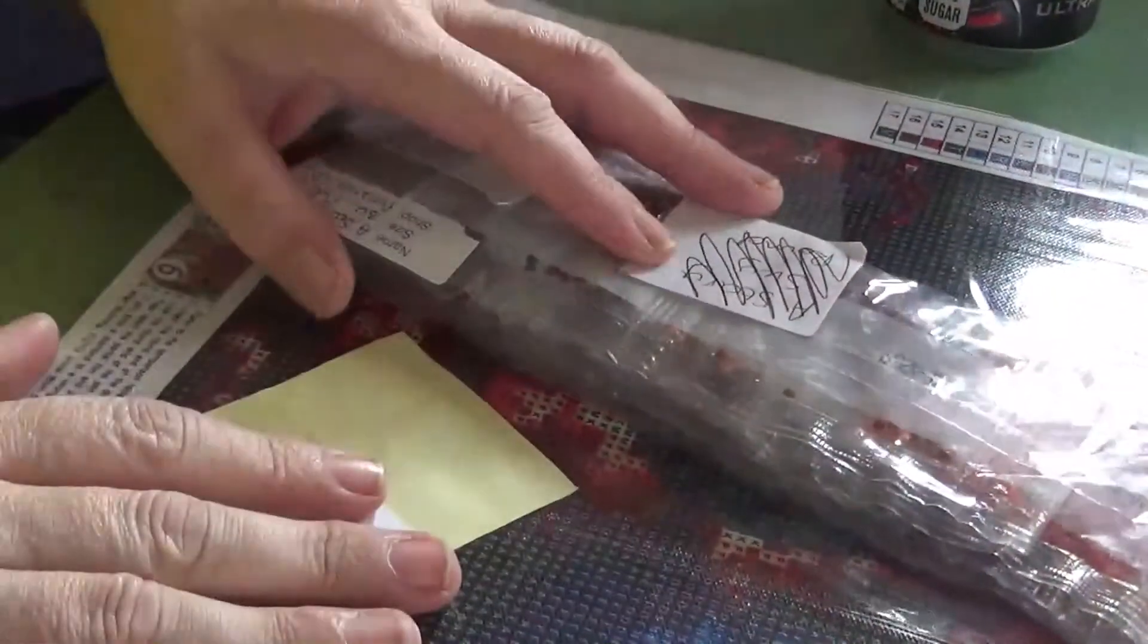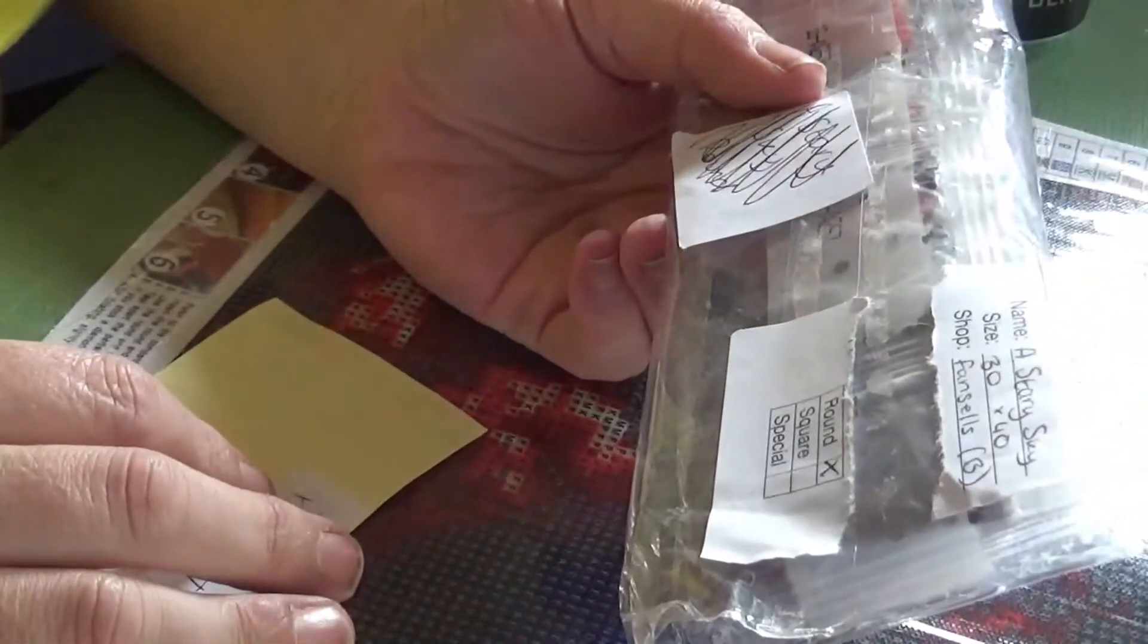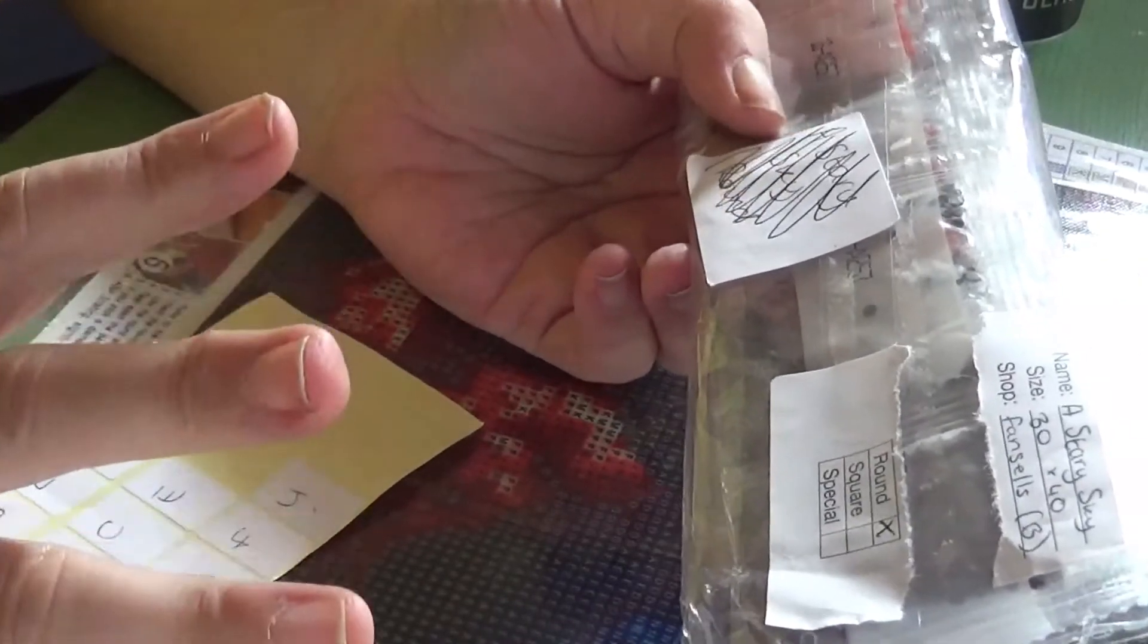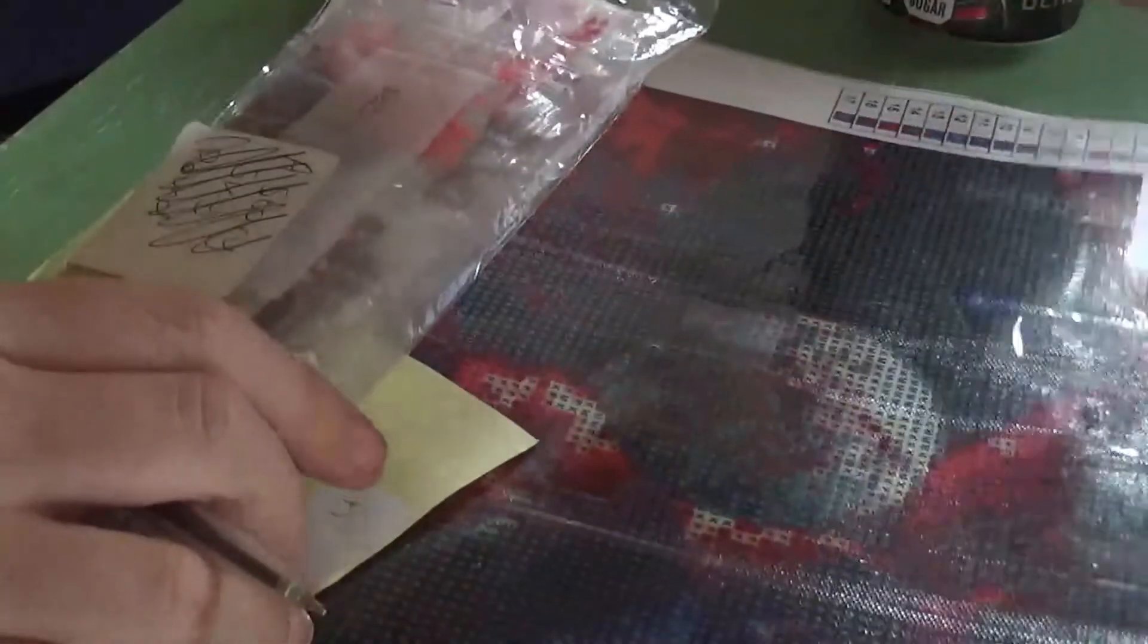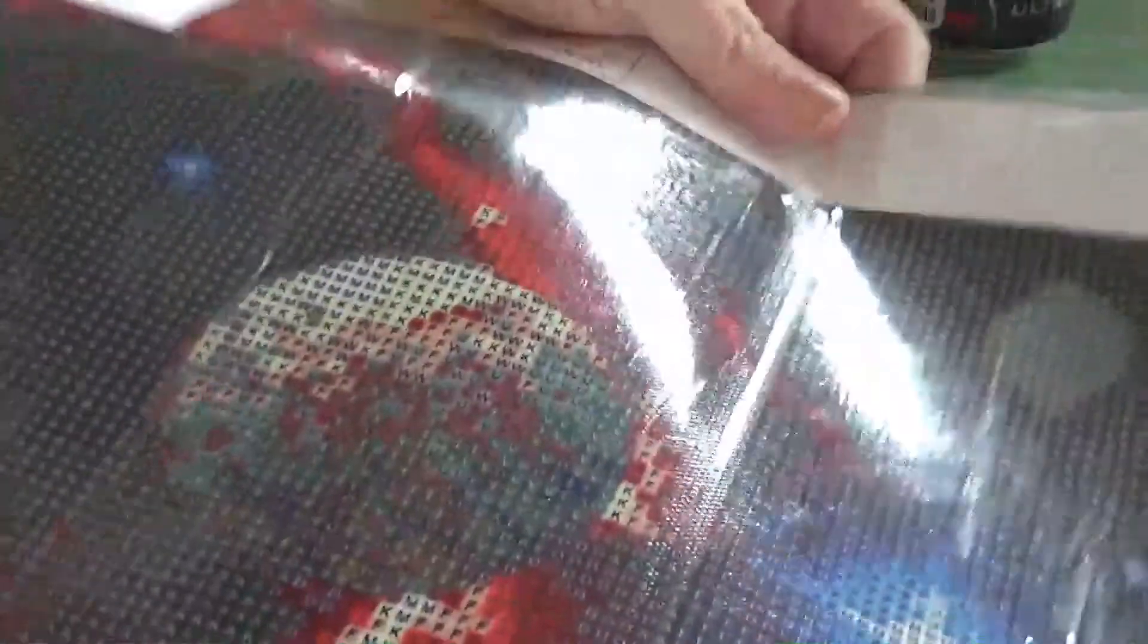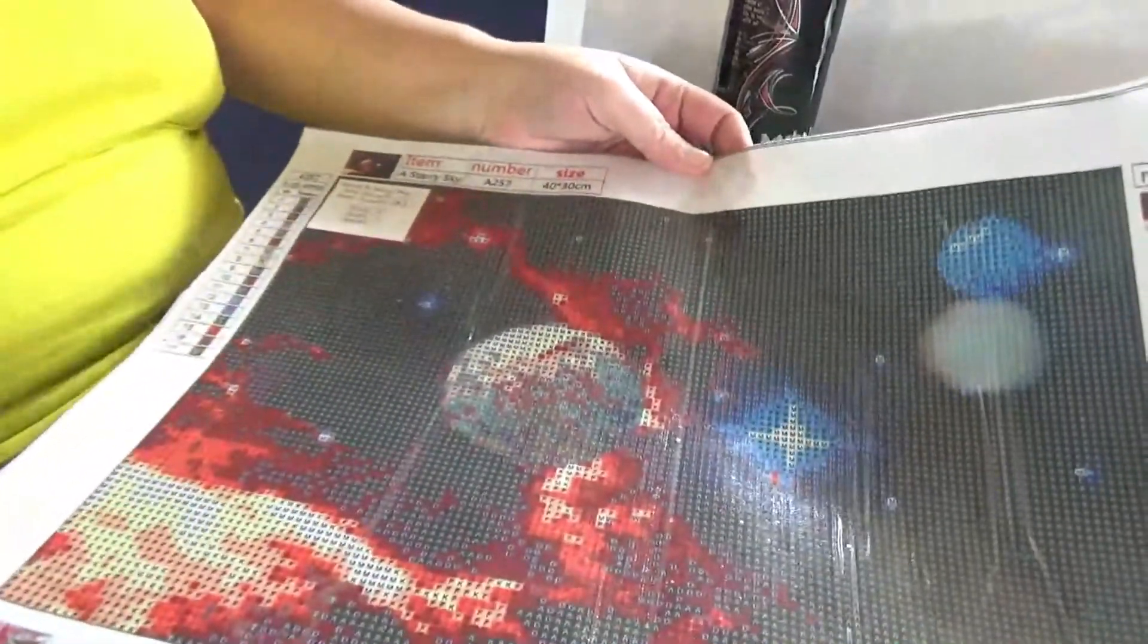Hi honeys, so today we're doing a kit up and we are kitting up a Star of Sky which is a 30 by 40 from fan cells and it is round. Now I did get this, I won in a giveaway so I don't know if you still have it but this is the image there.